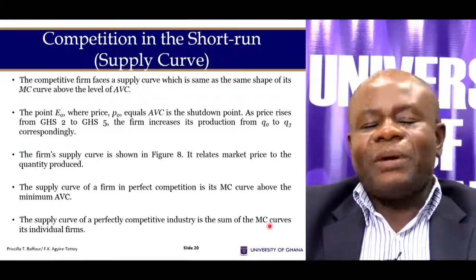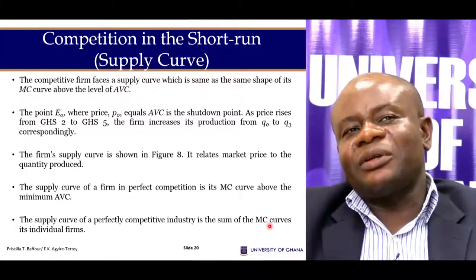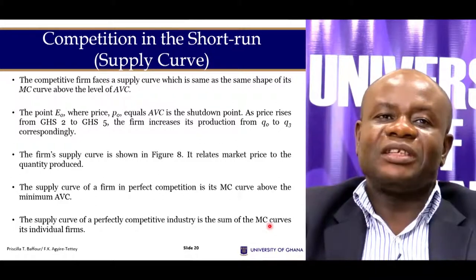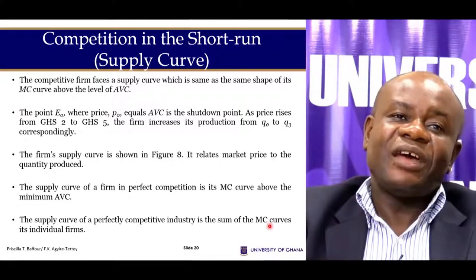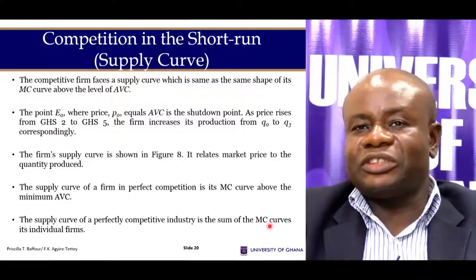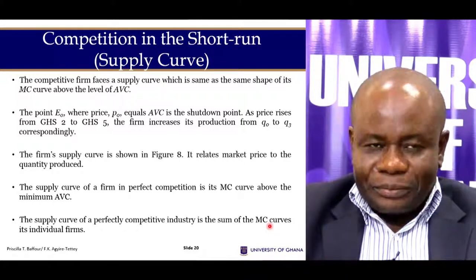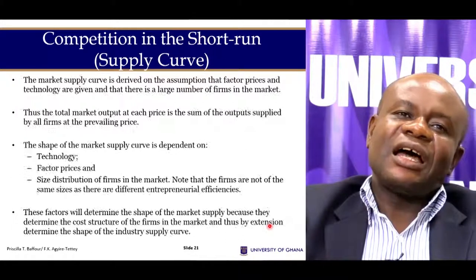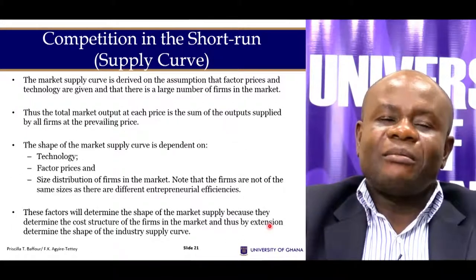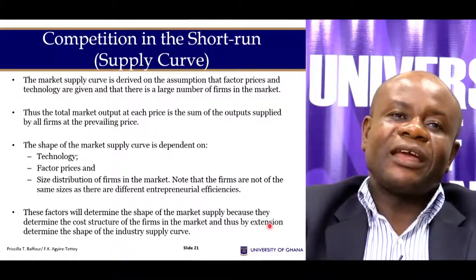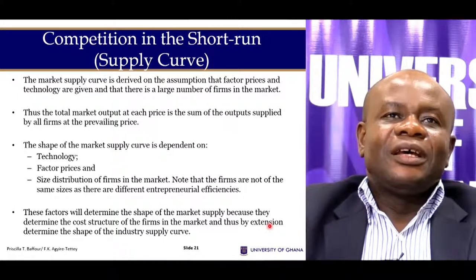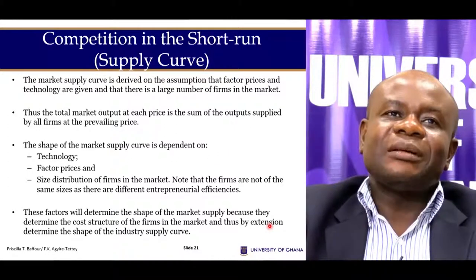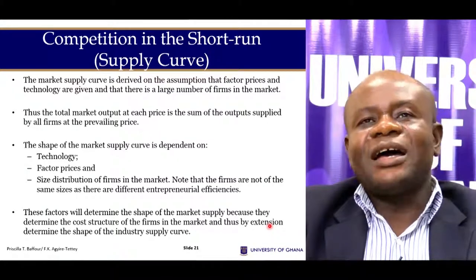We are not interested in the part of the marginal cost curve that lies below the minimum AVC, because when the price falls below the minimum AVC the firm will not produce any unit and must shut down. So the part of the marginal cost curve that lies above the minimum AVC is the supply curve for the firm. The market supply is the horizontal summation of the individual supply curves.